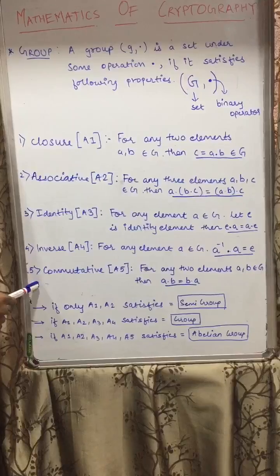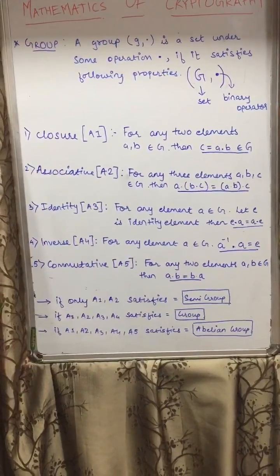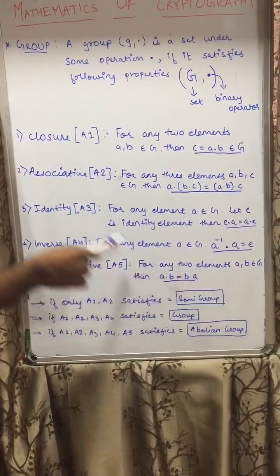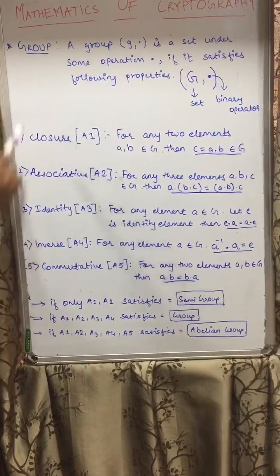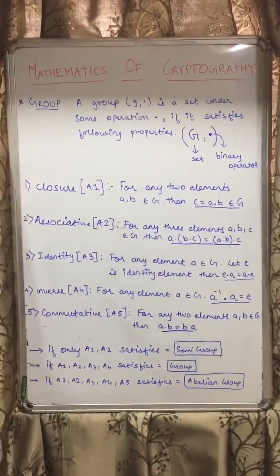So let's talk about the fifth property which is commutative property A5. For any two elements a, b belongs to G, then a · b is equal to b · a. I have explained you all the properties which should be defined in a group or which defines a set as a group.